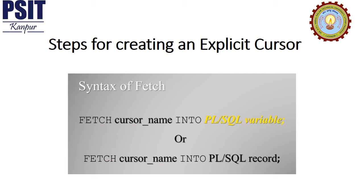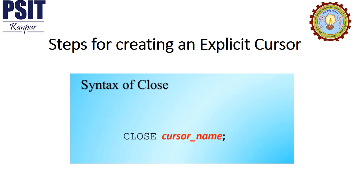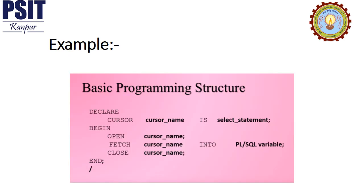The next step is FETCH. The process of retrieving the data from the cursor is called fetching. Once the cursor is declared and opened, you can retrieve the data from it. To close the cursor, you simply write the keyword CLOSE followed by the name of the cursor: CLOSE cursor_name. Here is the basic programming structure of the cursor in Oracle Database: the DECLARE section, the BEGIN section, and the END section.